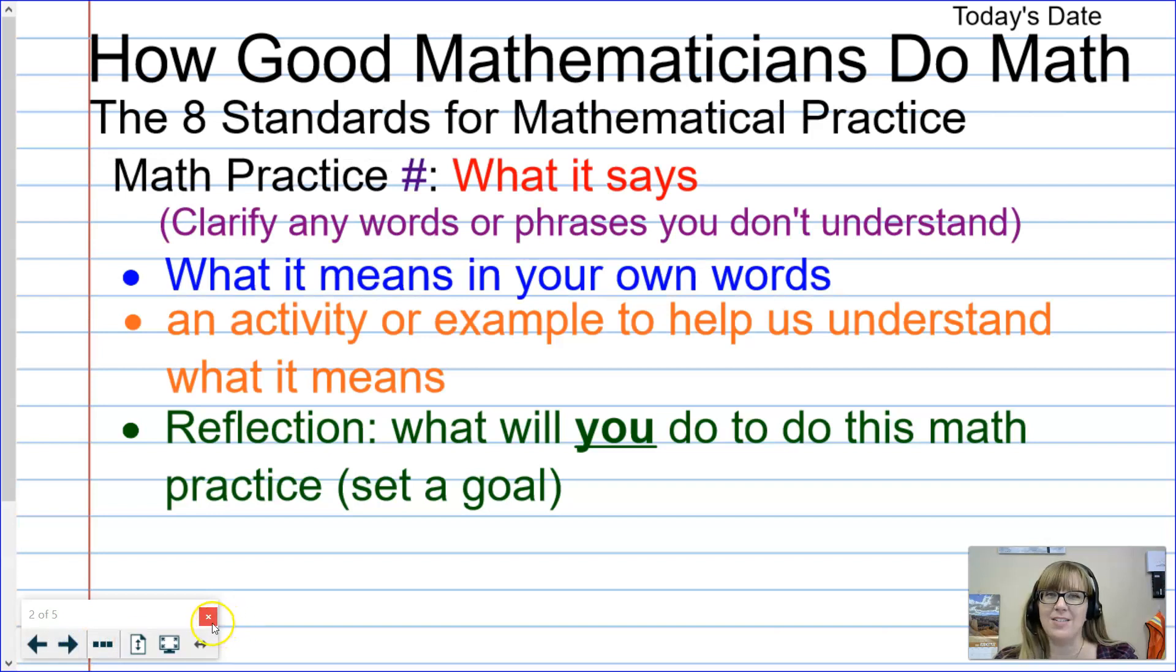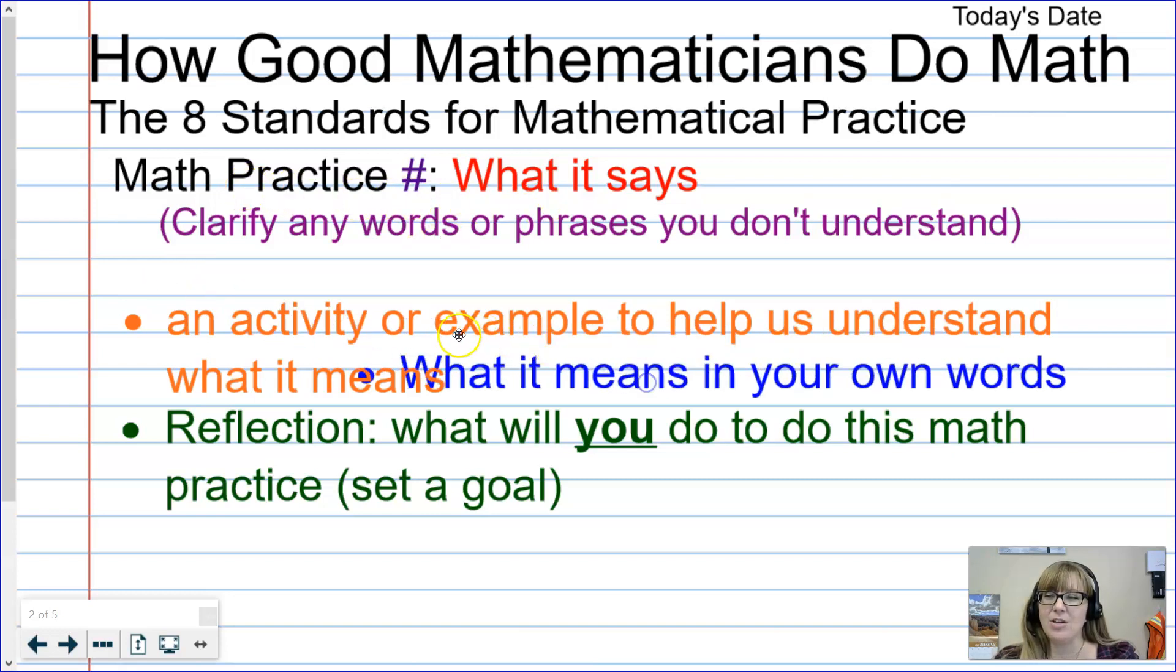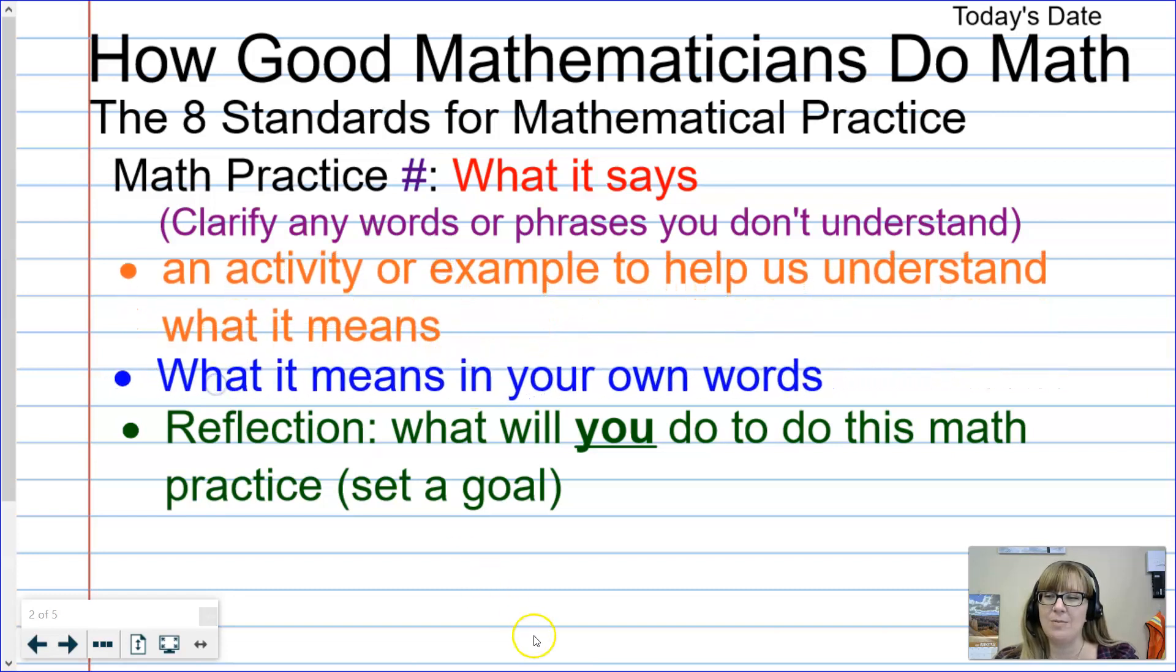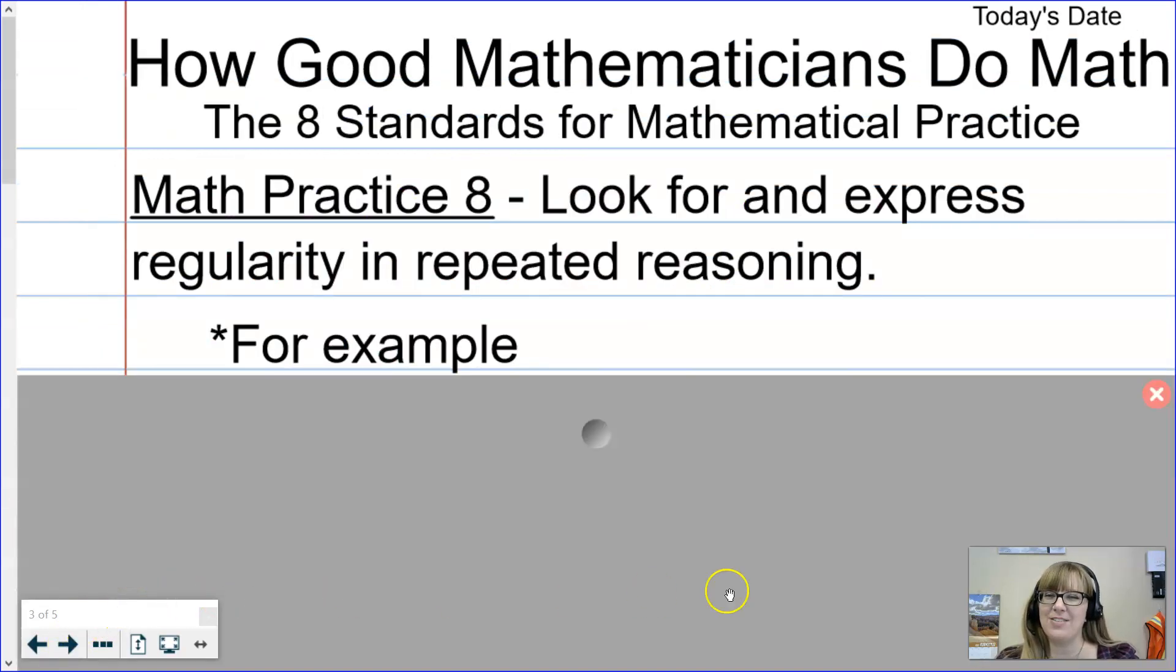Now let's move on to math practice eight. Remember the format of our notes: we're going to start by writing down the math practice number and what it is. This time we're actually going to do an activity or an example to help us understand before we write down what it means in our own words, and then finally we'll finish up with a reflection. Here's math practice eight: look for and express regularity in repeated reasoning.